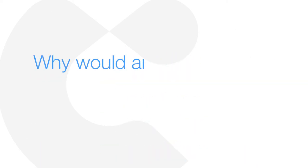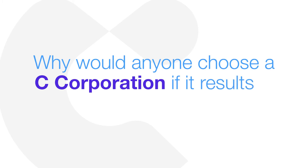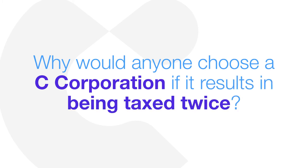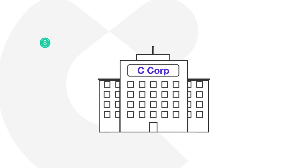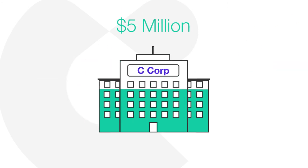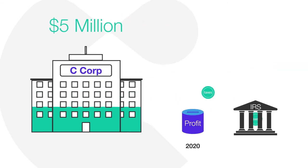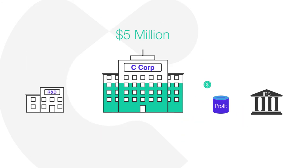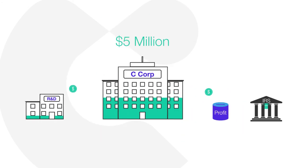Why would anyone choose a C-corporation if it results in being taxed twice? Well, a C-corp allows owners to retain earnings inside the business, which can be useful if you want to delay paying taxes. If you're making $5 million, you may not want to take all that money out of the business each year and get taxed on it. Instead, that money can be reinvested in research and development or further growth opportunities.